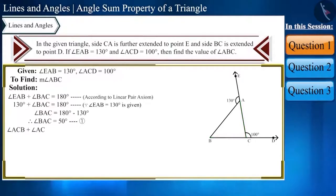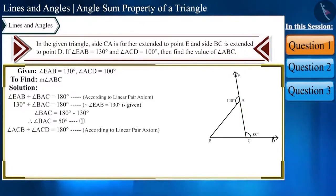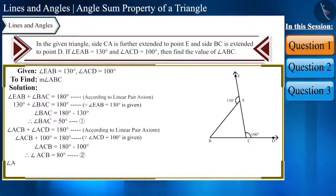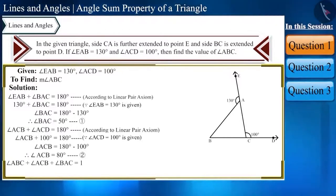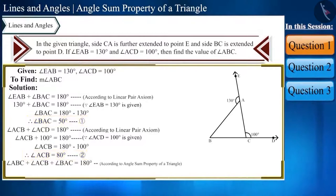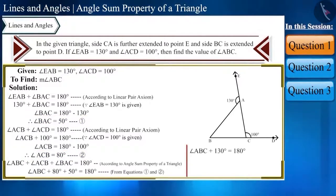Similarly, angle ACB plus angle ACD equals 180 degrees because it is a linear pair. Putting in the value of angle ACD, we get angle ACB equals 80 degrees — equation 2. Now, angle ABC plus angle ACB plus angle BAC equals 180 degrees by the angle sum property of a triangle. Substituting equations 1 and 2, we get angle ABC equals 50 degrees. The first question is solved.